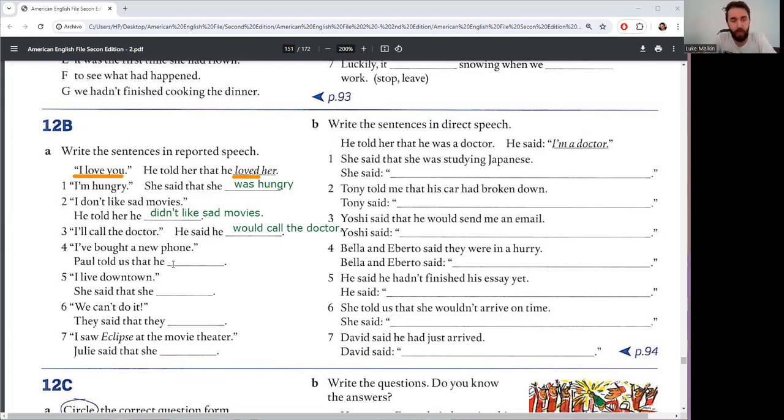Number four, I've bought a new phone. Paul told us that he had bought a new phone. The original was present perfect: I have bought a new phone. Change present perfect to past perfect. Paul told us he had bought a new phone.